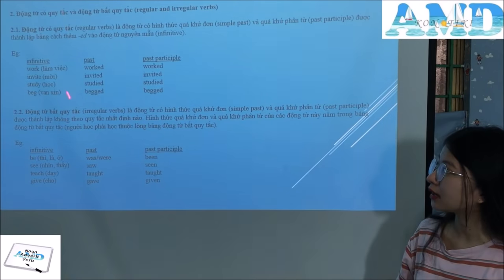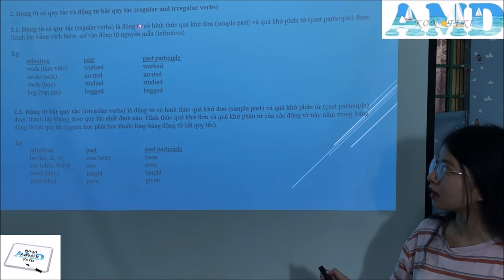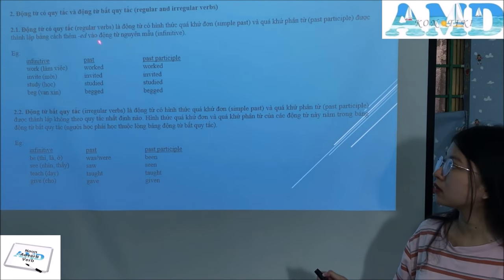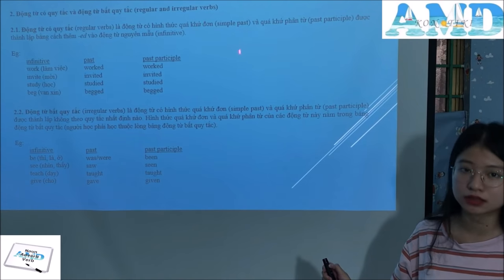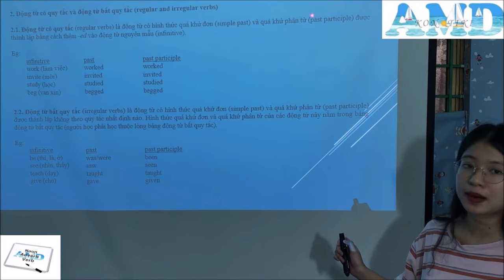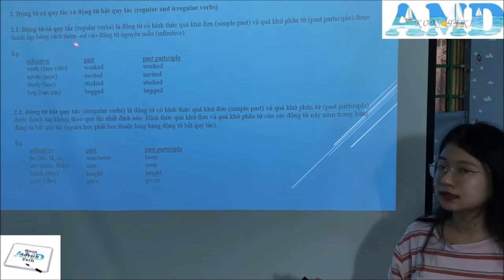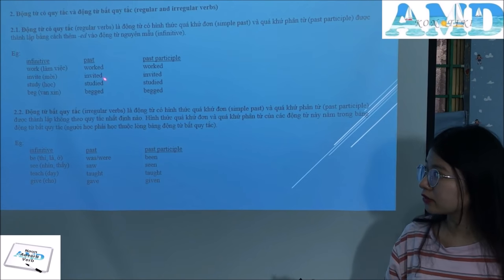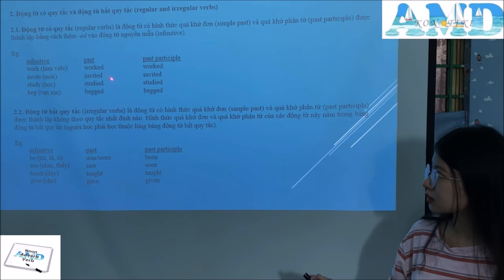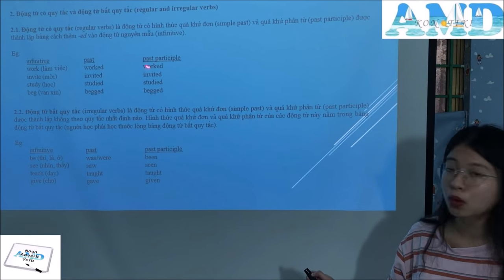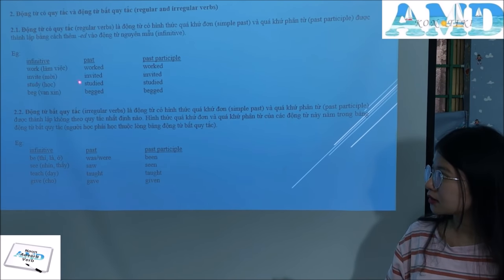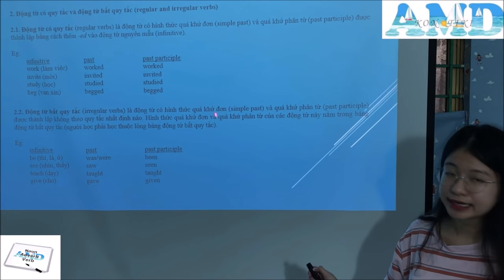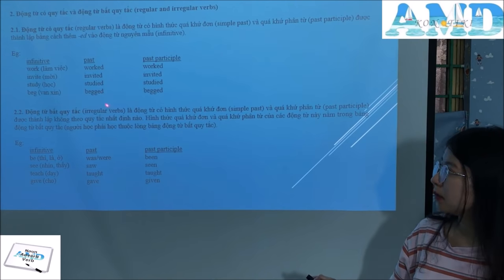The second classification criterion: verbs are divided into regular and irregular verbs. Regular verbs are verbs whose simple past and past participle forms are formed by adding the suffix '-ed' to the infinitive. For example: infinitive 'to work', past 'worked', past participle 'worked'. 'To invite' — 'invited' — 'invited'. 'Study' — 'studied' — 'studied'. 'Bad' — 'badded'.